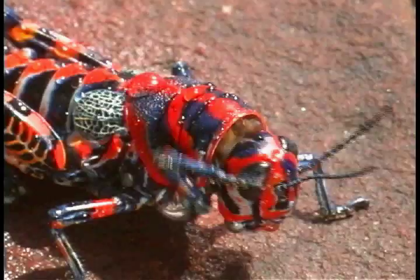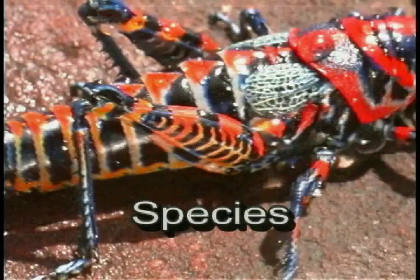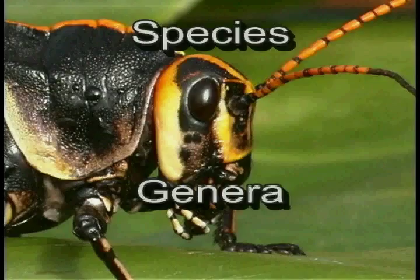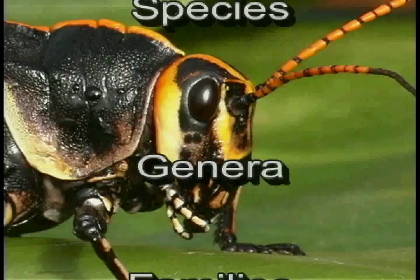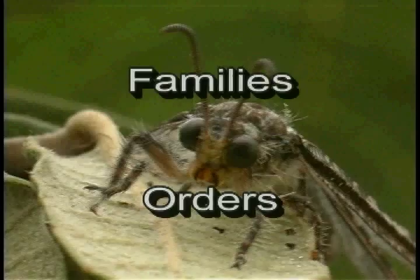Closely related species are grouped into genera, groups of genera into families, and groups of families are combined into orders. All of the orders are then combined to make the class that we call Insecta or Hexapoda.